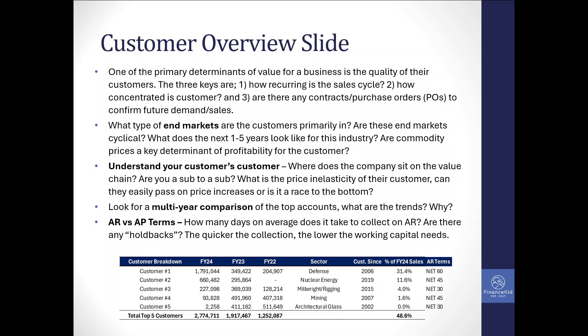From a customer contract standpoint, when looking to buy a business you want to understand what is sustainable and what you can expect in terms of performance going forward. That starts with customers and the certainty of their demand. Also consider the type of end markets they're in — for example, if you're a manufacturer supplying the defense sector, where is defense in the economic cycle? Are governments cutting spending or are there conflicts driving increased military investment? The key question is: what does demand look like at a macro level for that sector?